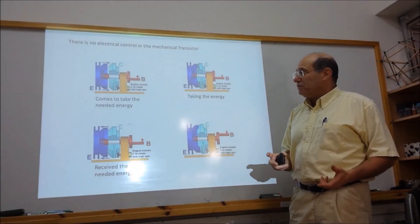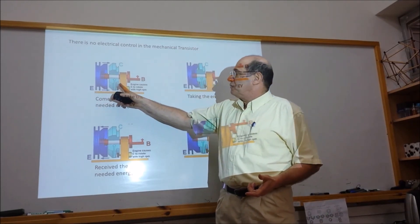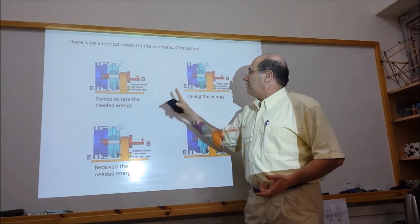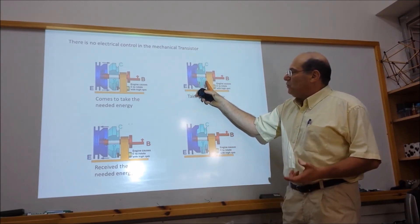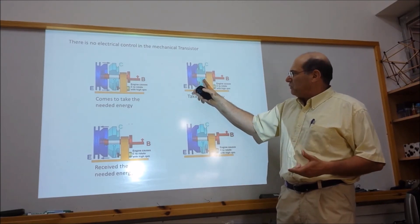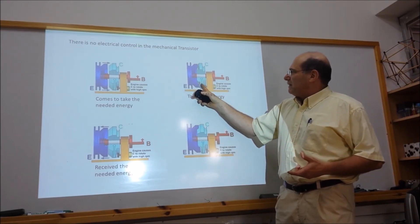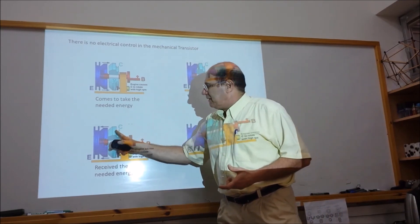So the behavior is like this. The emitter goes to the right, takes the needed energy. Now it takes it. And it knows through the friction how to take the exact amount of energy it needs. After it takes it, it goes left.